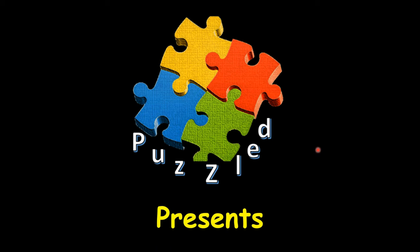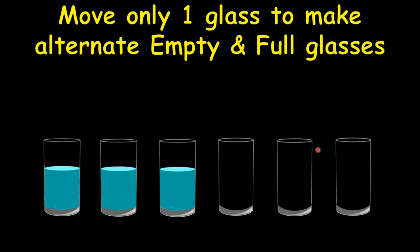Hello friends, we are back with a new puzzle. You have six glasses - three of them are full and three are empty. You have water in three glasses that are continuous, and then we have three empty glasses back to back. You have to move one of these six glasses.